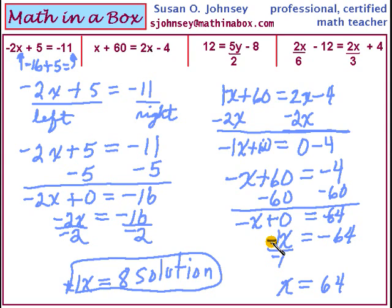1 divided by 1 of course is 1 and so we have our positive 1x. But if I divide the left side by negative 1, I must divide the right side by negative 1. Negative 64 divided by negative 1 is positive 64. There's our solution for the second problem.